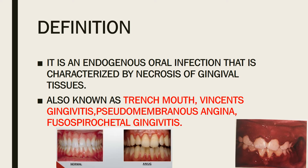Endogenous means something originating internally. It is that type of oral infection characterized by necrosis of gingival tissue — necrosis being the localized death of living cells due to interruption of blood supply. It is also known as trench mouth, Vincent's gingivitis, pseudomembranous angina, and fusospirochetyl gingivitis, named after the causative organism.